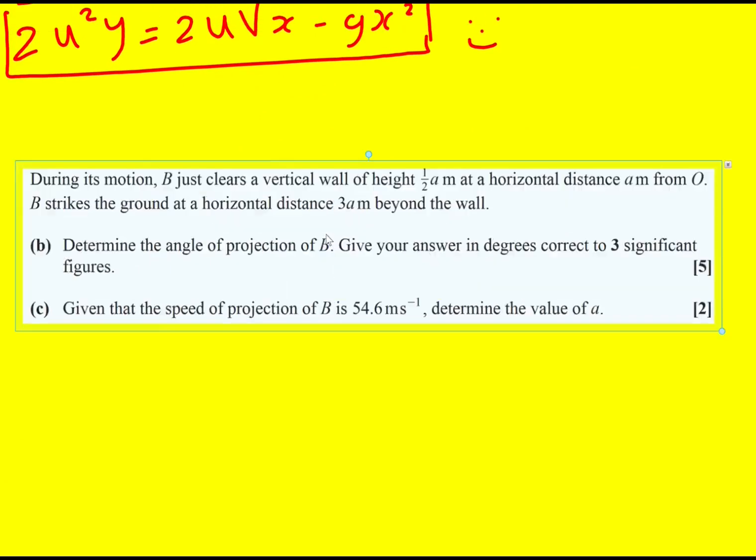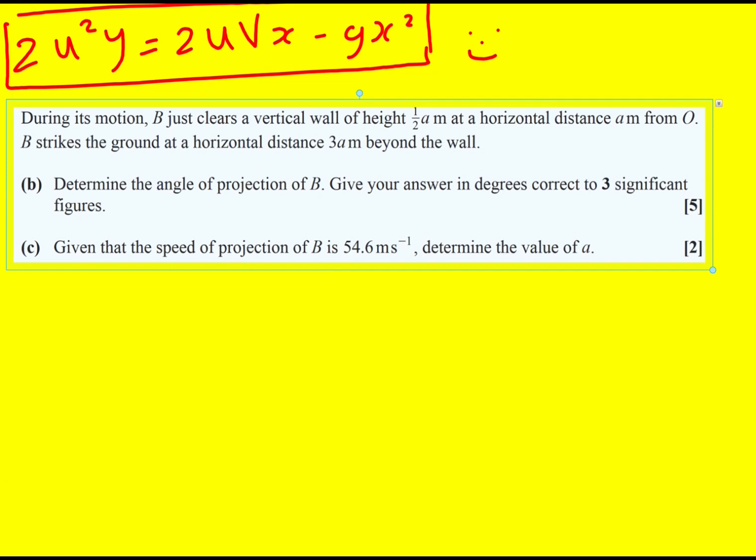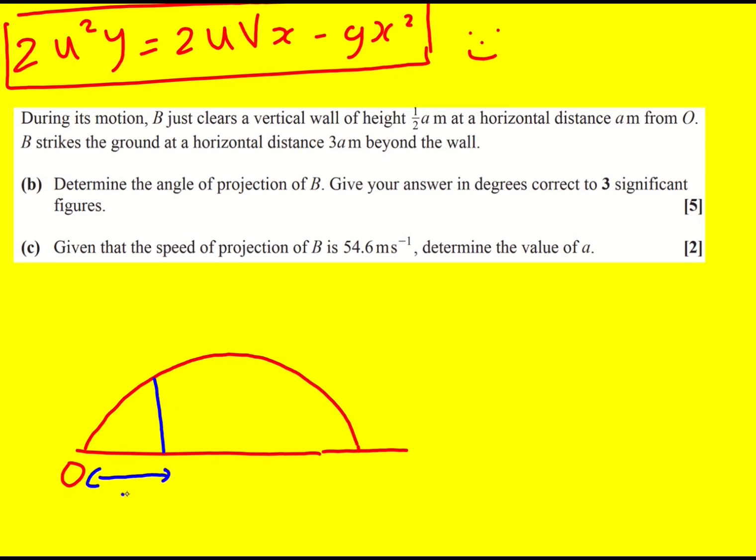Let's move on to part b, just bearing in mind this formula. So we're told that during the motion b just clears a vertical wall of height a half a at a horizontal distance a from o. So here's the ground starting with o. And it's going to be a wall here after a meters, which is a half a in height. Then b strikes the ground. It's a horizontal distance 3a beyond. Now this actually caught me out when I did it. I didn't read it quick, you know, I read it too quickly, and I put 3a as the distance, but it's actually going to be 4a. And I've put, not that it really matters, but put the half a in the right place because the midpoint is going to be at 2a. So it's going to be before, it's going to be on the way up rather than on the way down.